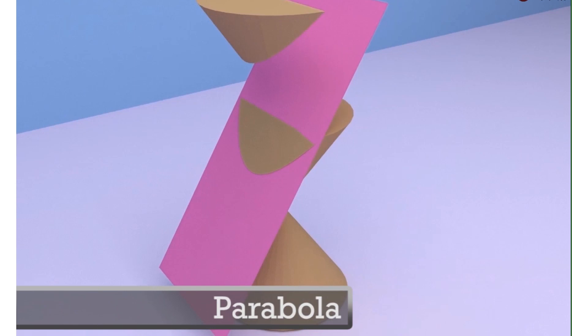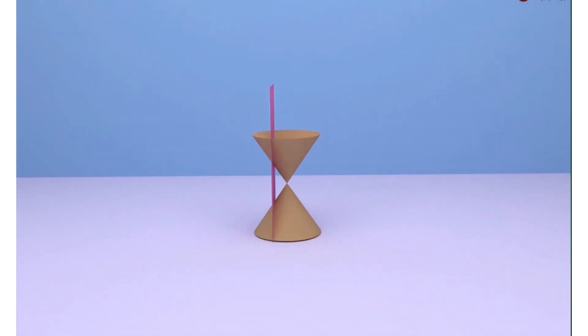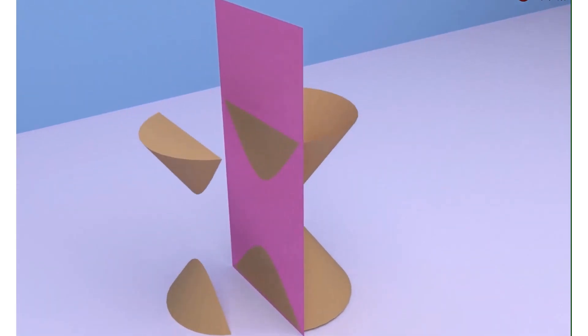For the fourth situation, I have increased the angle even further such that the plane is now vertical to the axis of the cone. In this situation, when I cut my double right circular cone, both cones are now given two independent shapes and together they are called hyperbola.